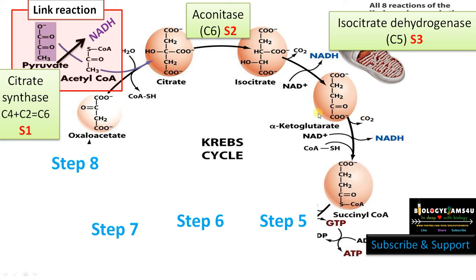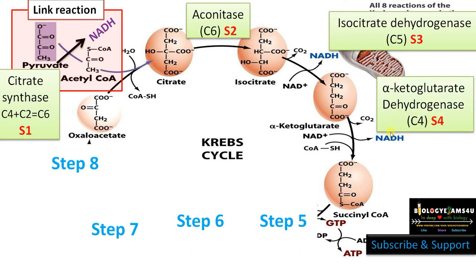In step 4, alpha-ketoglutarate is converted to succinyl coenzyme A and the enzyme involved is alpha-ketoglutarate dehydrogenase. Here also the number of carbon atoms is reduced from C5 to C4. These are two consecutive steps where C6 is converted to C5 alpha-ketoglutarate, and C5 alpha-ketoglutarate is converted to C4 succinyl coenzyme A. The reaction is oxidative decarboxylation — carbon dioxide is released, NADH is formed, and coenzyme A is added.